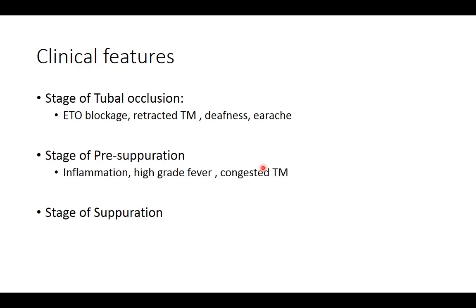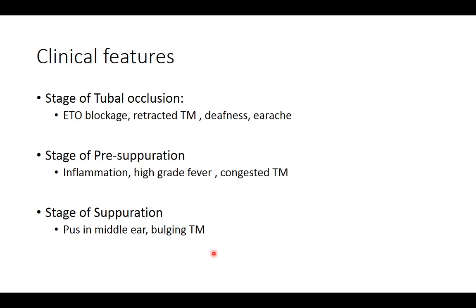In the stage of pre-suppuration, after retraction there is inflammation leading to high-grade fever and a congested tympanic membrane. The next stage is formation of frank pus in the middle ear cavity, leading to bulging of the tympanic membrane. So initially there is a retracted tympanic membrane, and later there is bulging of the tympanic membrane.